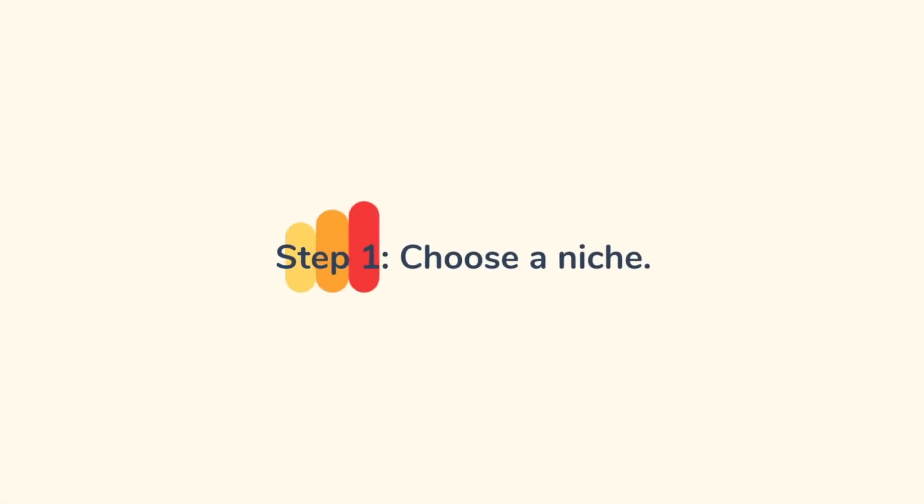Now let's get into the steps you need to take to start affiliate marketing. Step one: choose a niche. The first step in starting affiliate marketing is to choose a niche — a specific topic or area that you will focus on.